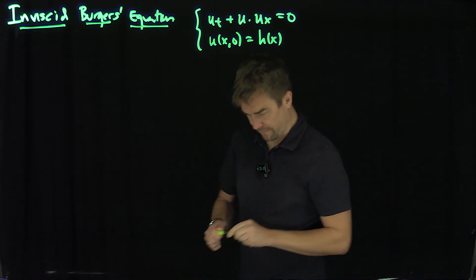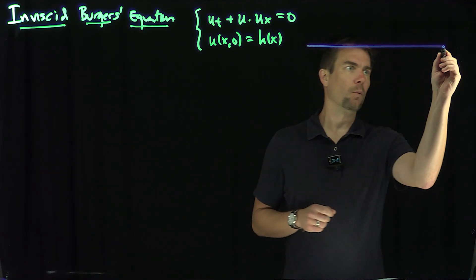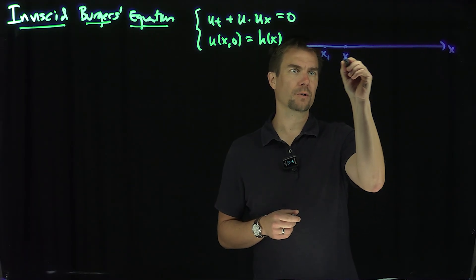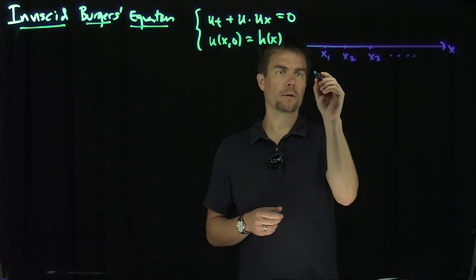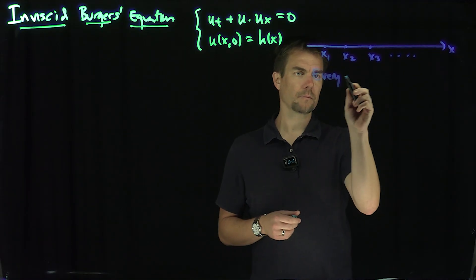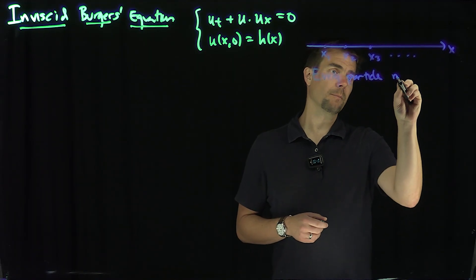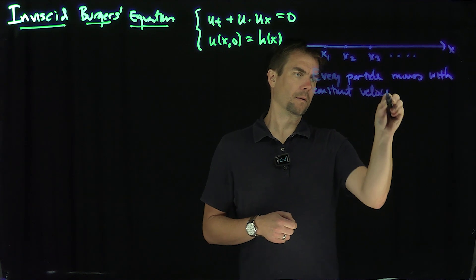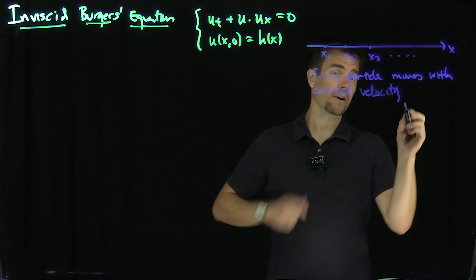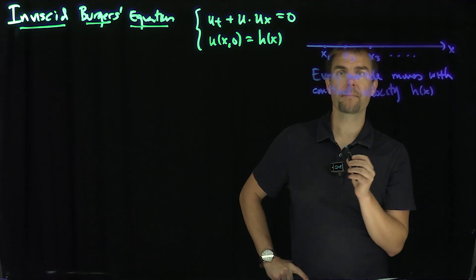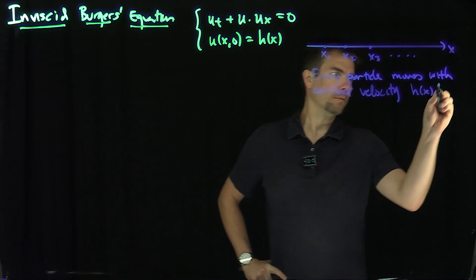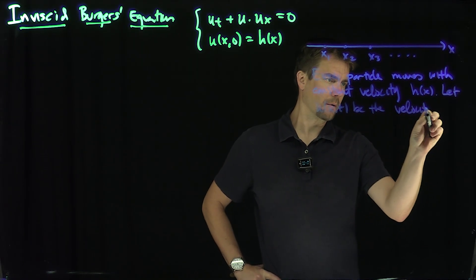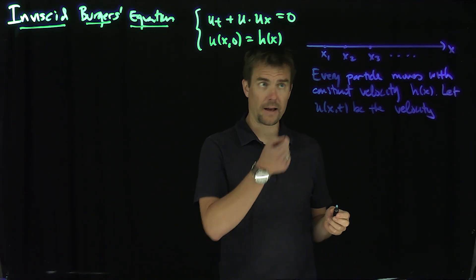Now where does this come from? It comes from the following very simple fluid model. We're going to consider a one-dimensional x-axis. At every point on the x-axis, we're given a particle x1, x2, x3. Every particle moves with a constant velocity, and that constant velocity is prescribed by the initial data — constant velocity h of x. We let u(x,t) be the velocity at point x that came from point x at any time t.